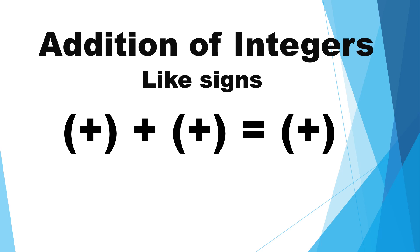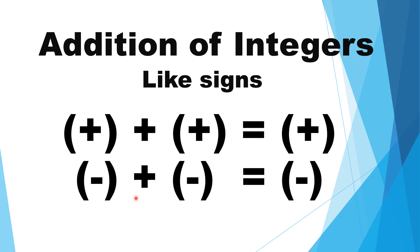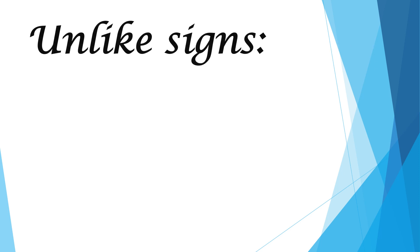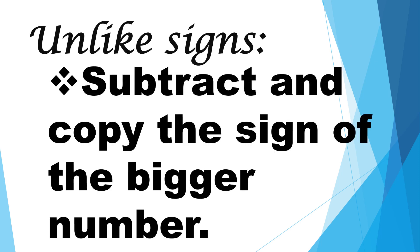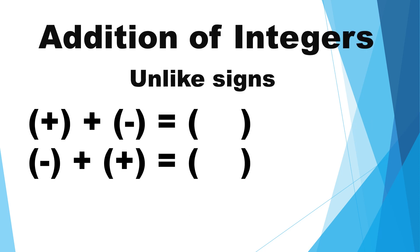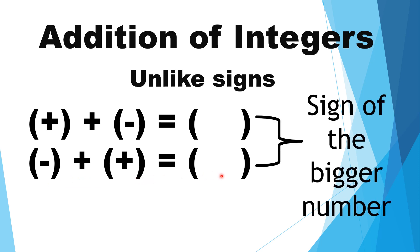Positive plus positive is equal to positive. Negative plus negative is equal to negative. If it is unlike signs, subtract and copy the sign of the bigger number. Positive plus negative is equal to the sign of the bigger number. Negative plus positive is equal to the sign of the bigger number.